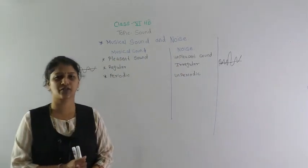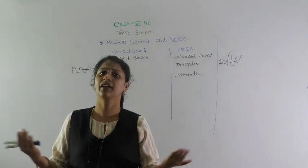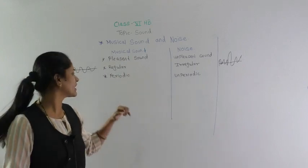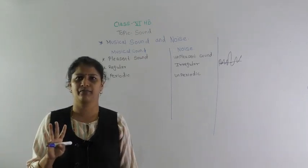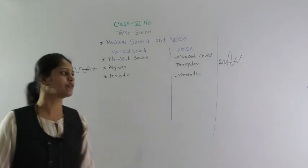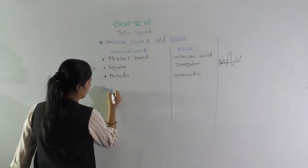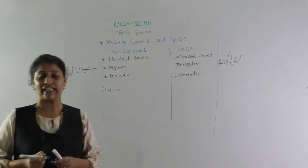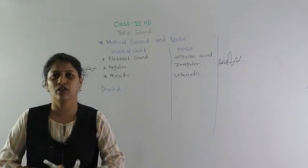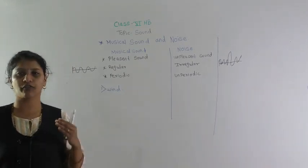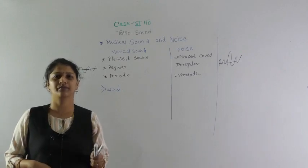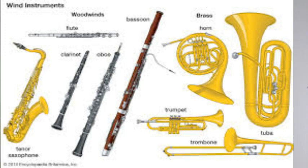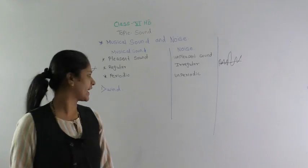Musical instruments are mainly classified into four types. The first is the wind instrument, where sound is produced by the vibration of a column of air inside a tube. For example, the shehnai — air is passed through the tube to produce the sound.